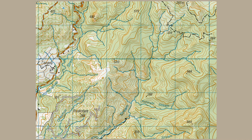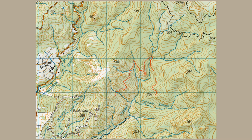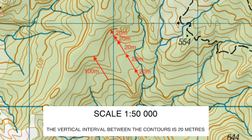The contour lines on a topo map allow you to visualise the area in three dimensions. Each line links points of equal elevation. Every fifth contour line is a darker index contour which gives the elevation above sea level. On this topo map the interval between contour lines is 20 m, meaning there is a 100 m elevation change between index contours.